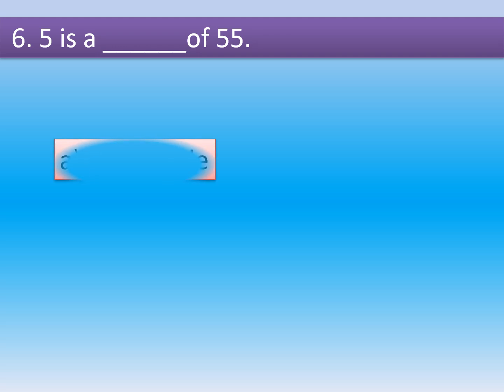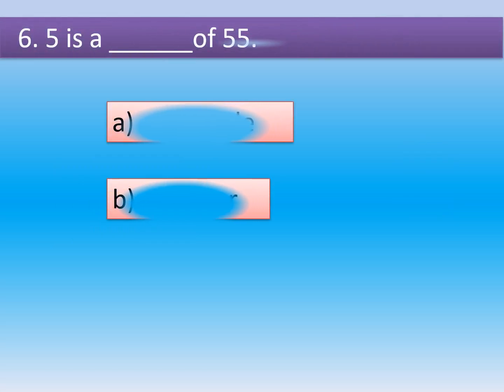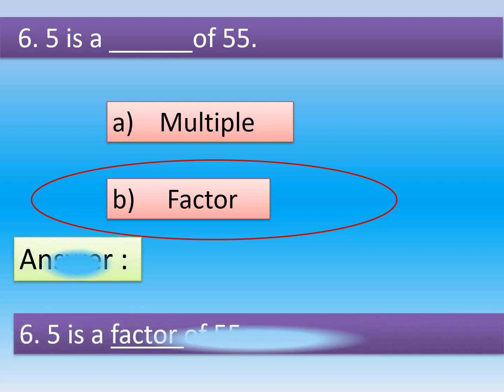Question number 6: 5 is a dash of 55. Option A, multiple. Option B, factor. The correct option is Option B, factor.